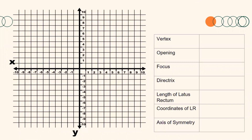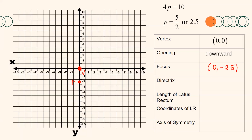The vertex of the parabola is at the origin, 0, 0, and the parabola opens downward. Since p equals 2.5, the focus and the directrix are 2.5 units away from the vertex. Since our parabola opens downward, the focus is below the vertex, 2.5 units away from it. Therefore, the coordinates of our focus are 0, negative 2.5. The directrix is outside the parabola and above the vertex, 2.5 units away from it, giving the line y equals 2.5.